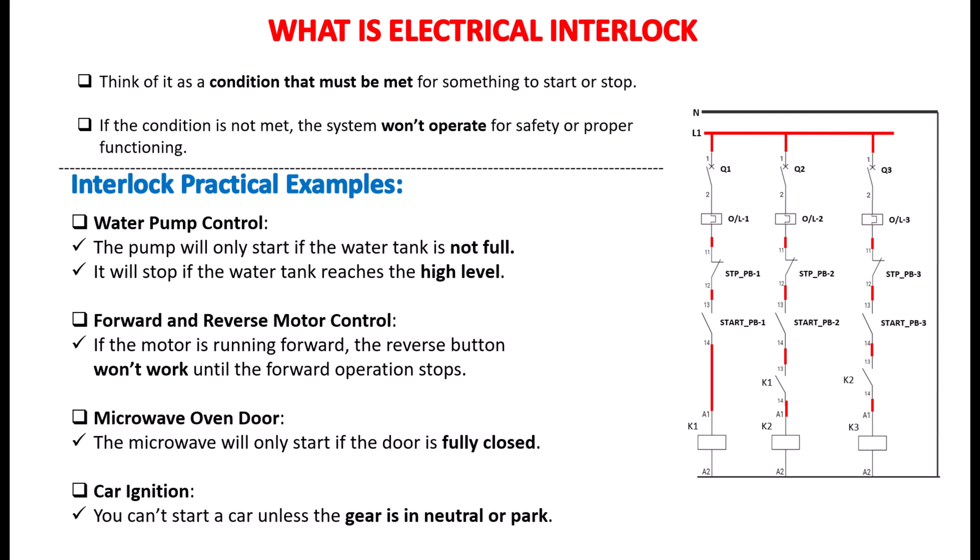The most common example is the microwave oven, which you use in daily life. Think about using a microwave. The microwave will only start cooking if the door is completely closed. If the door is open, it won't start. This is an interlock to keep us safe. You also experience the automatic car ignition. In a car, you can't start the engine unless the gear is in neutral or park. This is another interlock to prevent accidents and ensure the car doesn't move when starting.